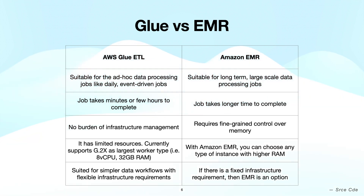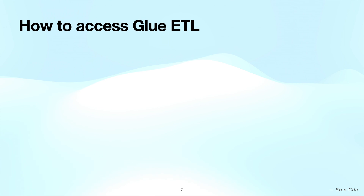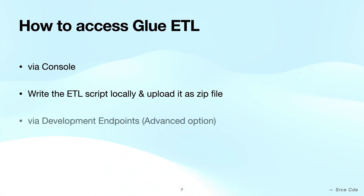So that was a few data points to differentiate between AWS Glue ETL and Amazon EMR, and when we can use one versus the other. Now let's understand how we can access Glue ETL. We can access it via the console, which is what we will do shortly. Another option is to write ETL scripts locally and upload them to Glue Studio as a zip file. The advanced option is via Glue development endpoints.